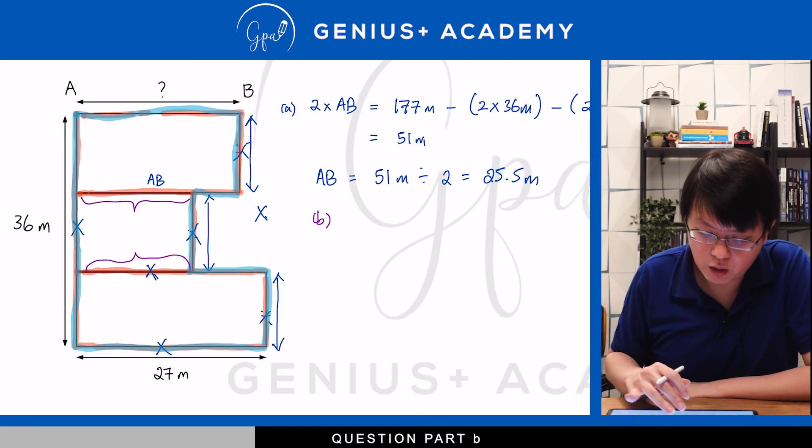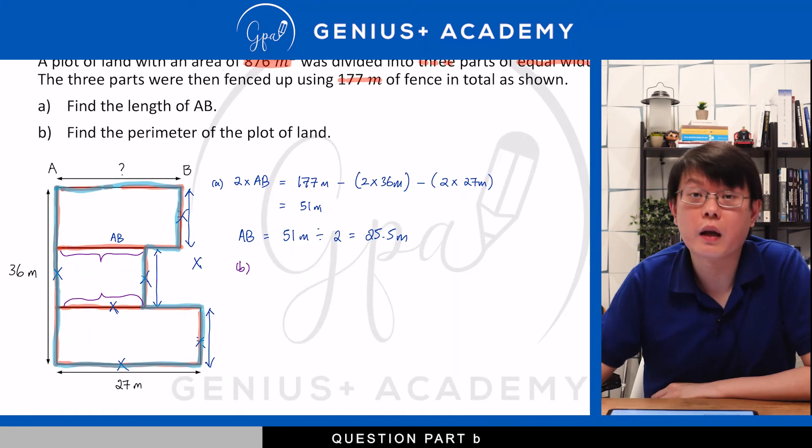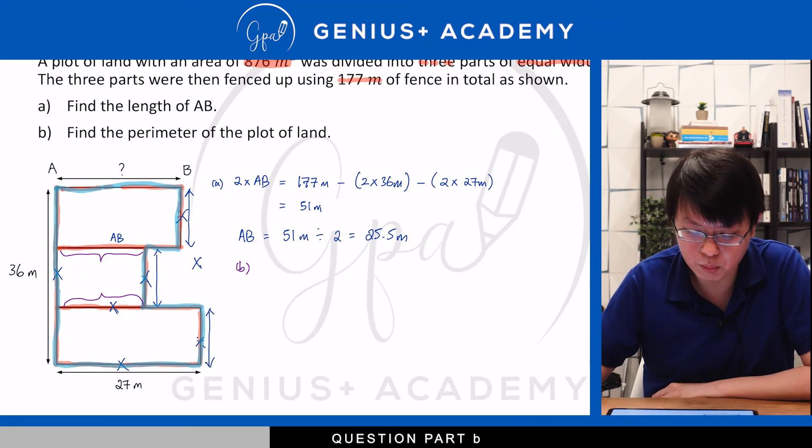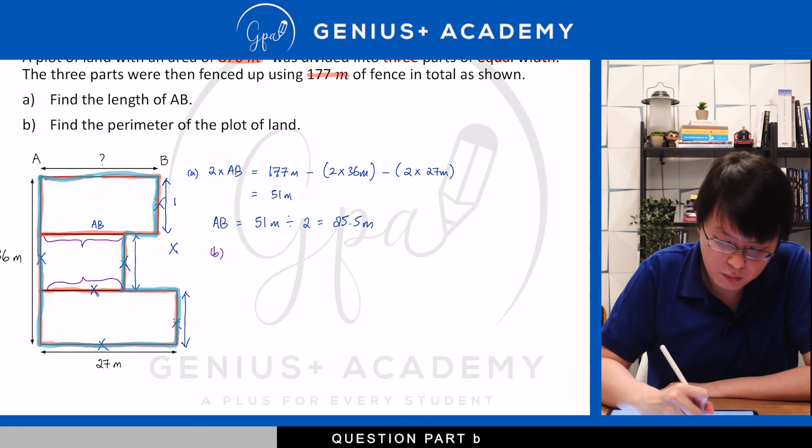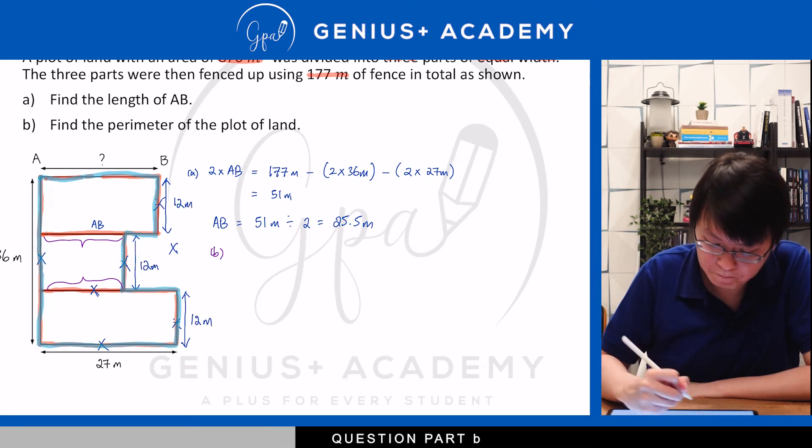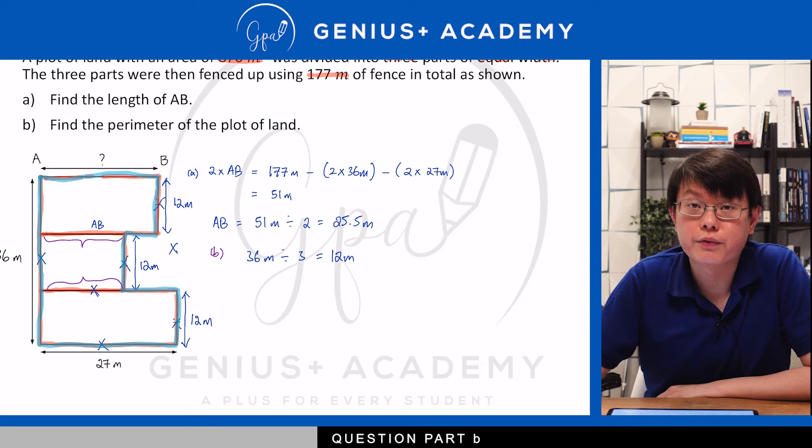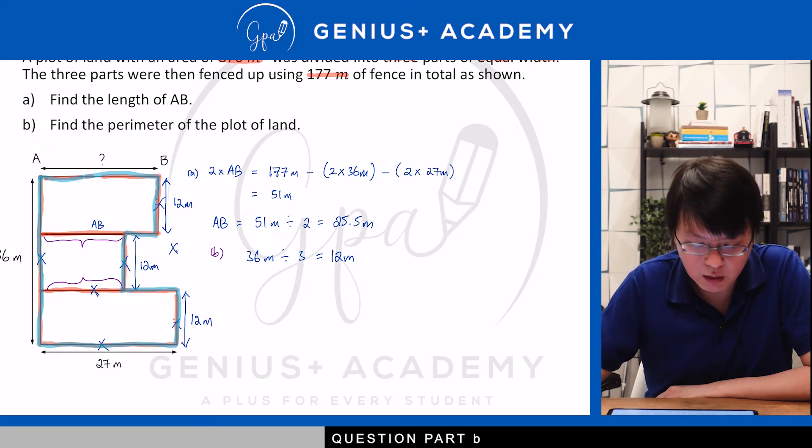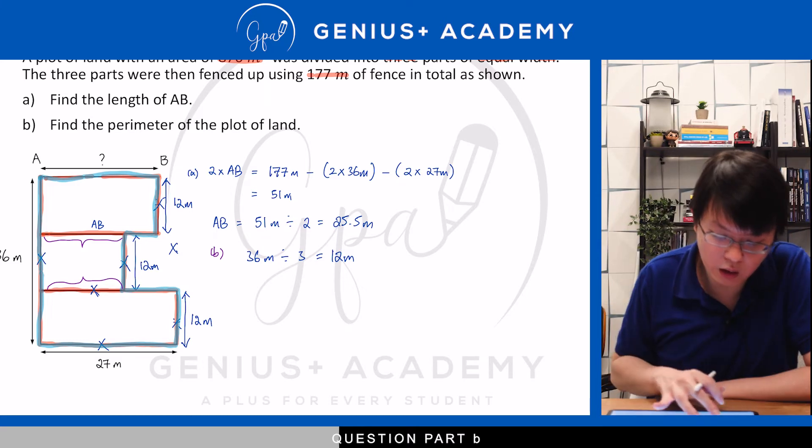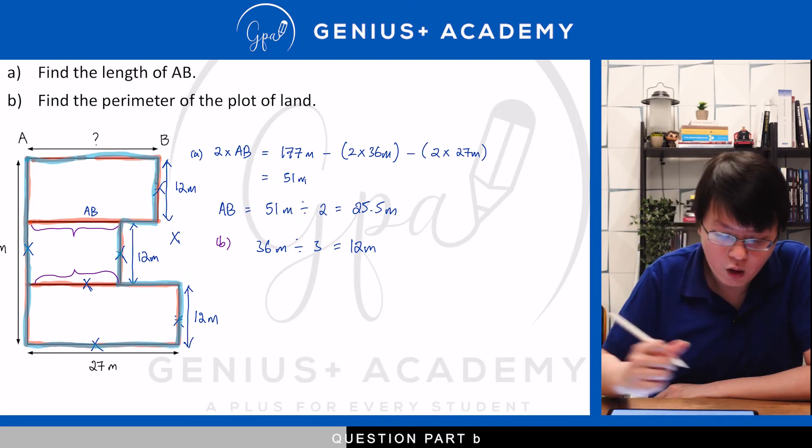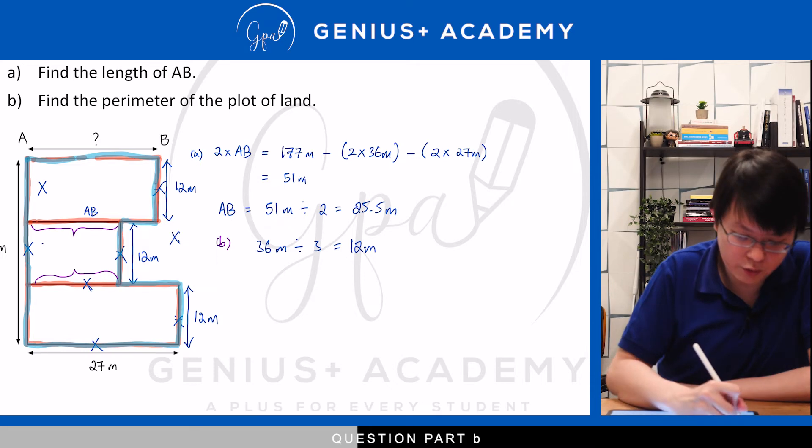To do that, we will need to make use of the area. Remember that area is length times breadth. And we have the breadth of each individual piece of land as 12 metres because 36 divided by 3 gives me 12. Once we have the breadth, we have the lengths of the other two plots of land. We can go on to find the area of the other two plots of land. So, for easier annotation, let's call the various plots of land x, y and z.